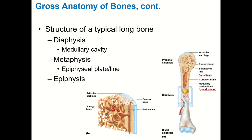Looking at the structure of a typical long bone — using the humerus as an example — there are three basic parts. The diaphysis is the shaft of the bone; on the humerus we mainly noted the deltoid tuberosity there. The medullary cavity is the cavity in the middle of the bone, filled with yellow marrow in adults — that's where triglyceride storage occurs. This cavity exists in the diaphysis and is unique to long bones.